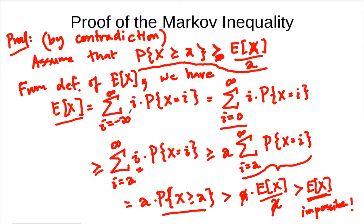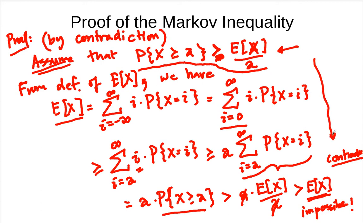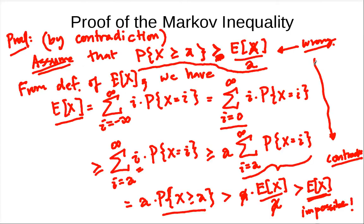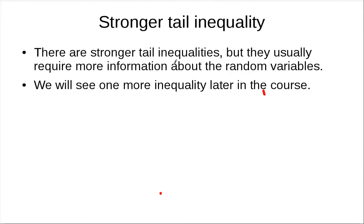We assumed something and ended up with a contradiction, so the assumption is impossible. This completes the proof of the Markov inequality. The Markov inequality is one of the tail inequalities — it characterizes the tails of a distribution.